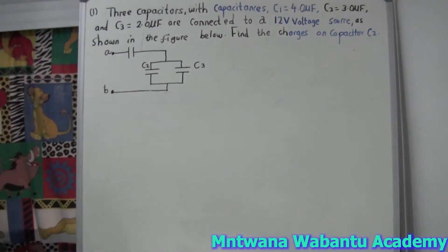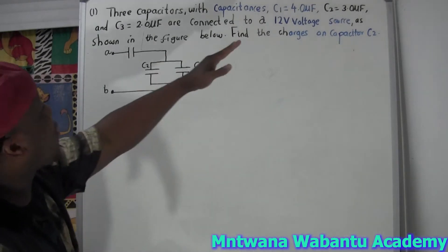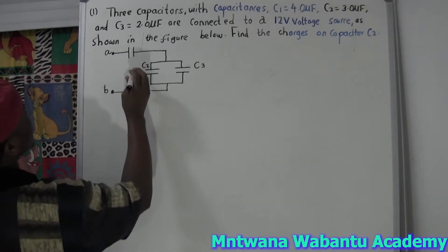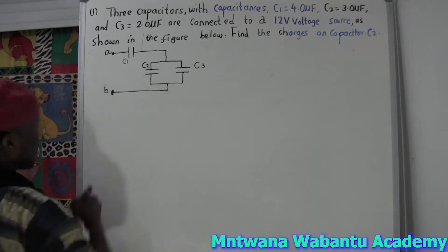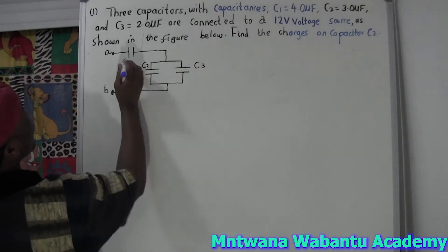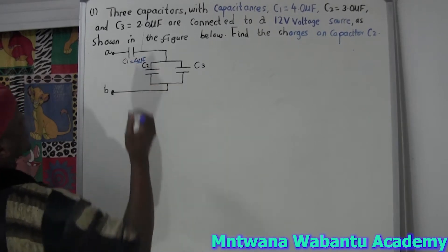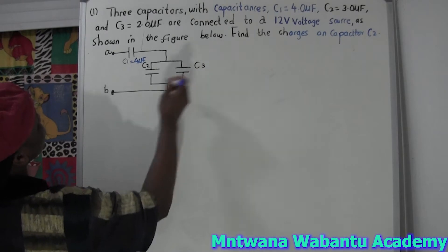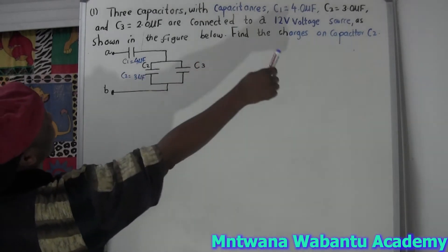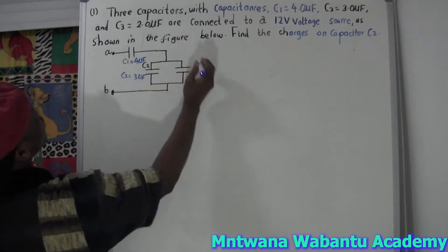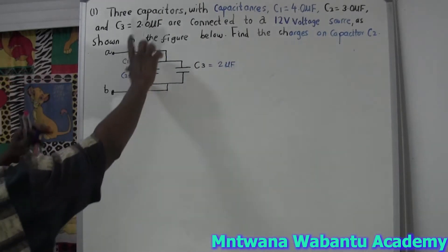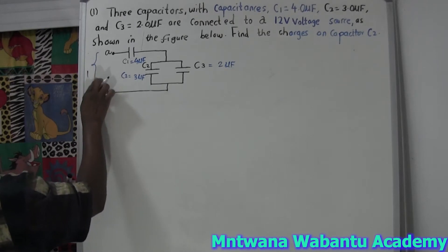We have three capacitors. C1 = 4 microfarads, C2 = 3 microfarads, and C3 = 2 microfarads. All three are connected to a 12-volt source.